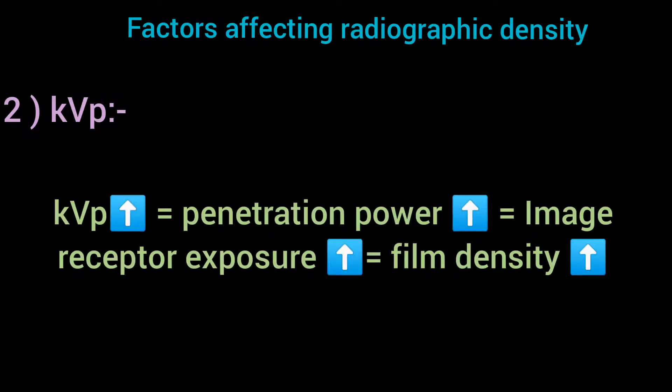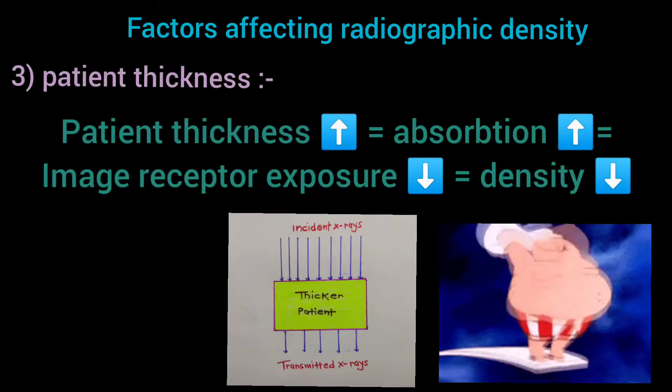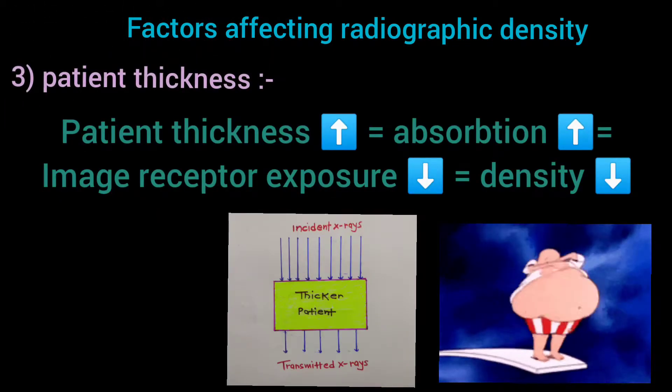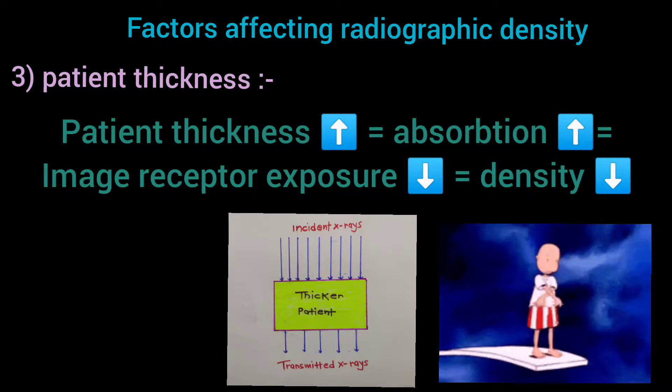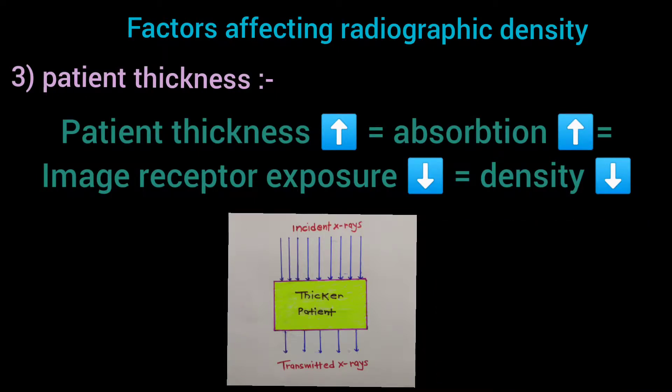Higher kVP means more penetrating X-ray photons able to pass through the patient and reach the image receptor, leading to increased film density. Thicker patient means more X-ray photons being absorbed by the patient, leading to fewer X-ray photons reaching the image receptor. This will result in decreased film density.